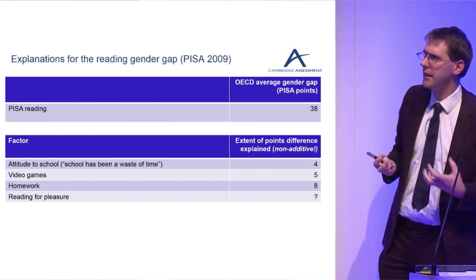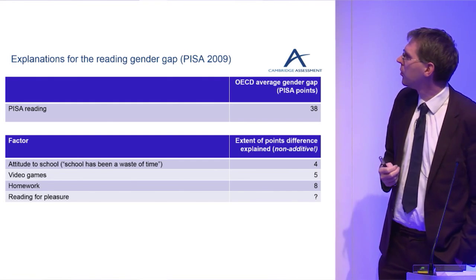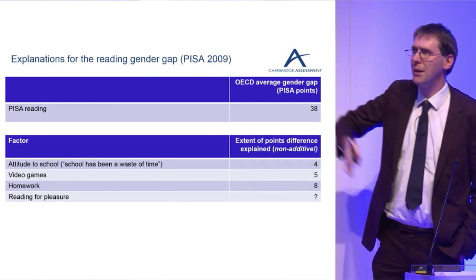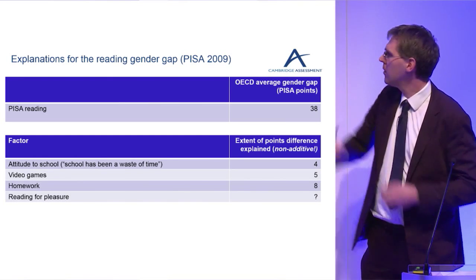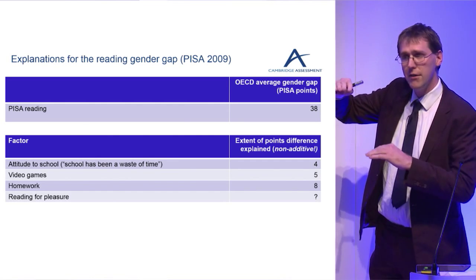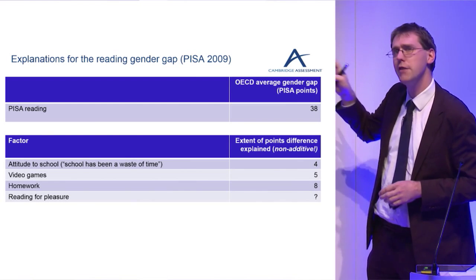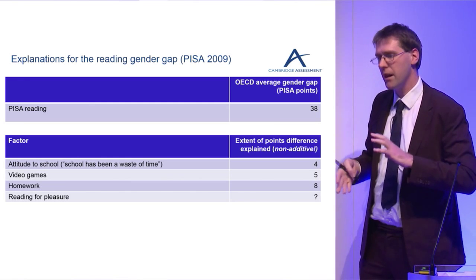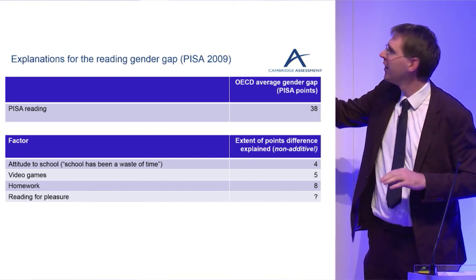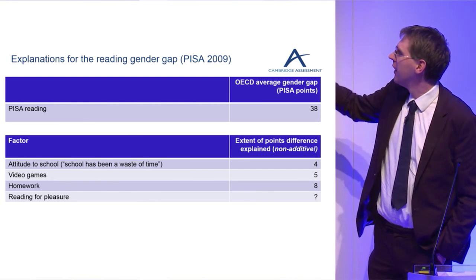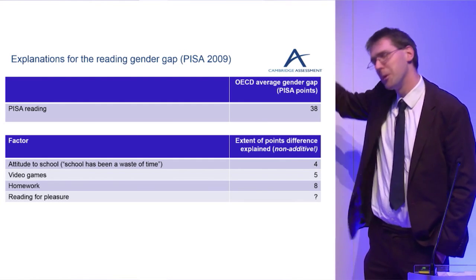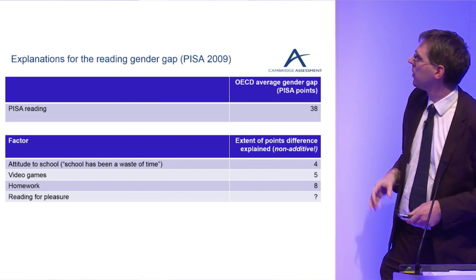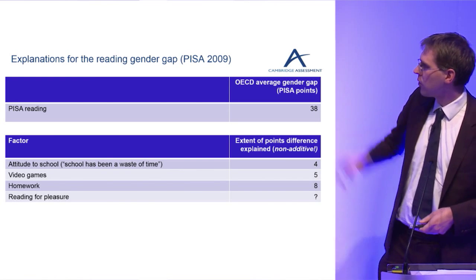Video games are often picked out as really damaging to progress, since boys play more. But if you compare boys who play video games with girls who play video games, and boys who don't with girls who don't, even controlling for video game use the gap is only five points smaller. Do the same thing with homework — boys doing just as much homework as girls — and it only reduces the gap by eight points. Don't add these numbers together though, because they interact: you might be doing less homework because you're playing more video games, and they're measured in different surveys.